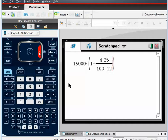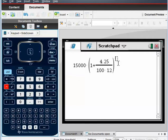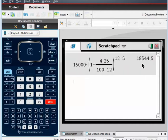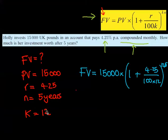And then push all the way across. And we want to power. Make sure the power is outside this bracket. It doesn't put a big bracket around everything. It's outside the bracket, and it's 12 times 5 years. And we press enter, and we get 18,544 pounds and 50 pence.